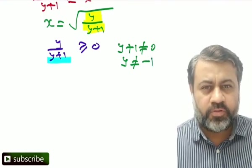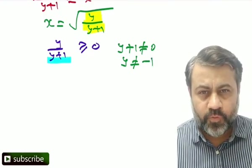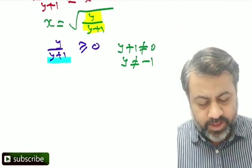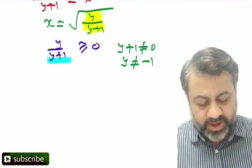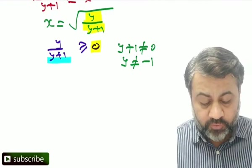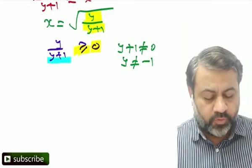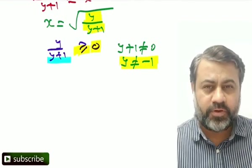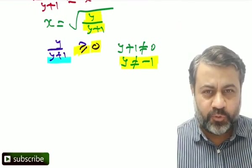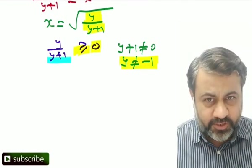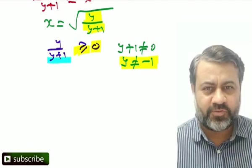Now there are two very important things here. One is that since inside we have equal to 0, y can be equal to 0. But y cannot take value minus 1. Two things: y can be 0, y cannot be equal to minus 1.